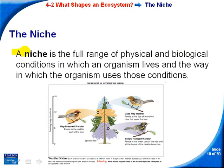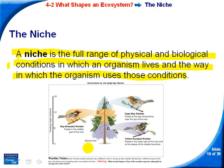The niche is the full range of physical and biological conditions in which an organism lives and the way in which the organism uses those conditions. For example, three birds all live in the same spruce tree, but one lives at the top, another in the middle, and the third at the bottom. They have very similar niches but not exactly the same, because the physical conditions differ slightly.